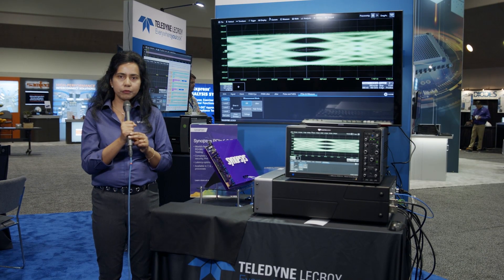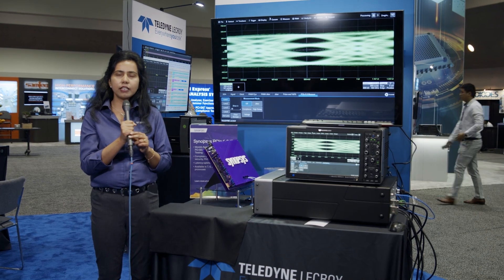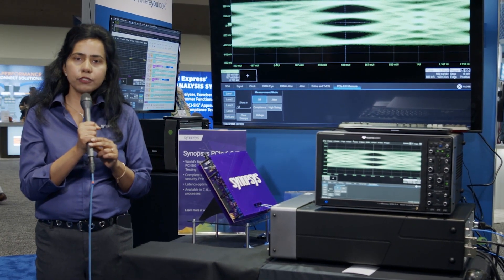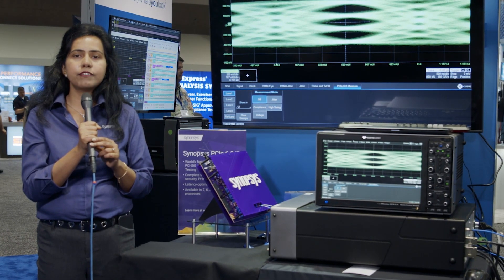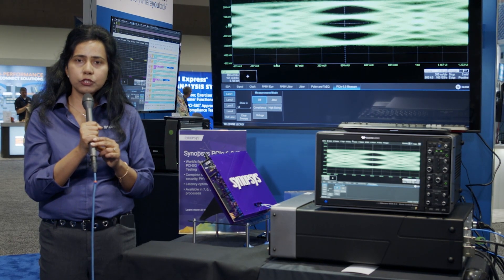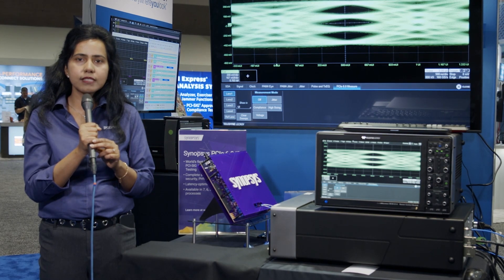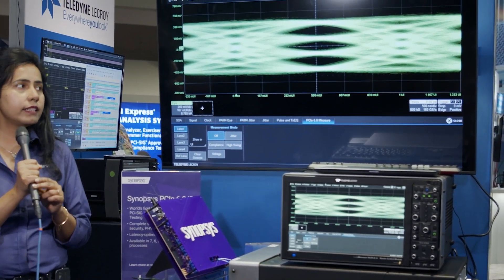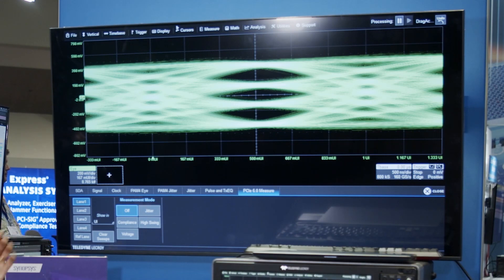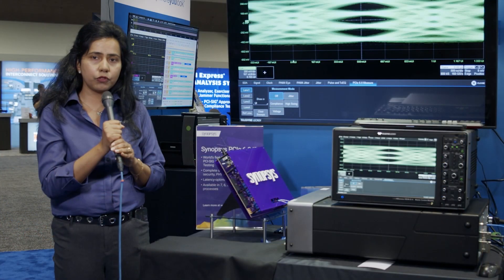We are at Teledyne LeCroy booth. We are demonstrating here our silicon proven PCIe Gen 6 IP with Teledyne LeCroy oscilloscope. As you know, PCIe Gen 6 has 10 preset settings and here we are varying the preset settings and showing the corresponding PAM4 eye characteristics. In the GUI graphical interface we are showcasing the Q0 preset and the worst preset and showcasing the PAM4 characteristics, for example the SNDR and the RLM, which is multiple times better than the spec. Thank you for watching.